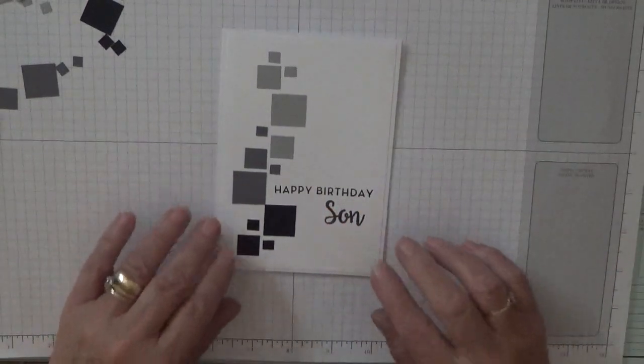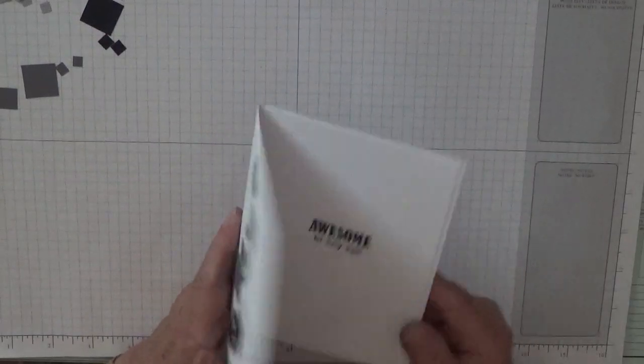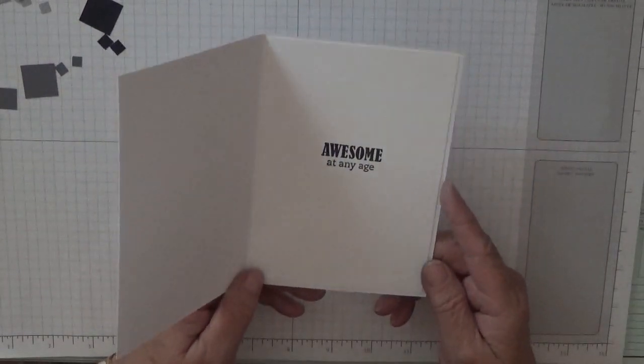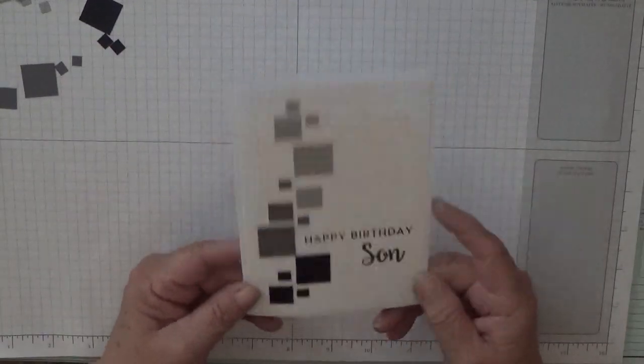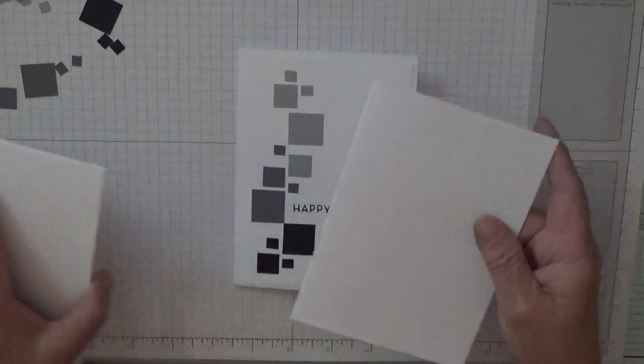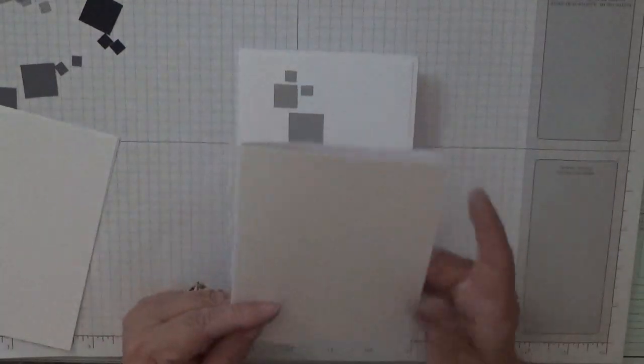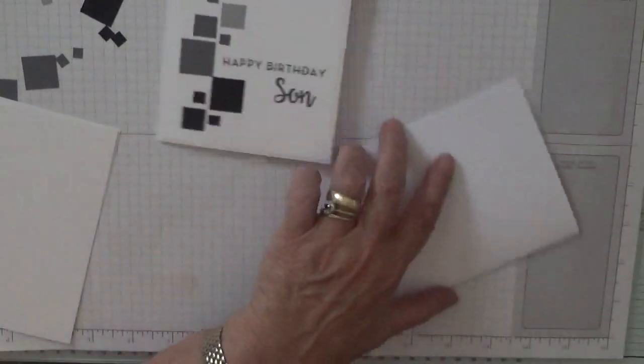So with this I've got a white card base of eight and a quarter by five and seven-eighths, scored at four and one-eighth and folded in half. And this needs burnishing.